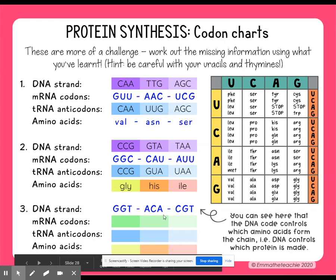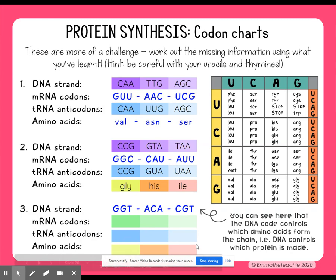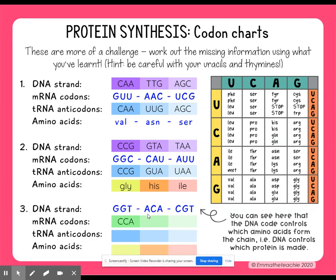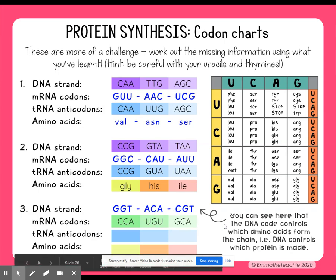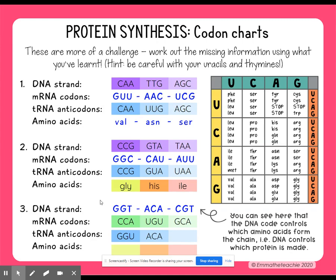Now we've been given the DNA, and here's where we can see how the DNA code controls and dictates what the messenger RNA is, which decides what the amino acid order is. GGT pairs with CCA in RNA. ACA pairs with UGU. And CGT pairs with GCA in messenger RNA. Then the anticodons — remember, tRNA carries these amino acids. Transfer RNA anticodons are going to look very similar to the DNA strand, except you'll have U instead of T: so GGU, ACA, and CGU.